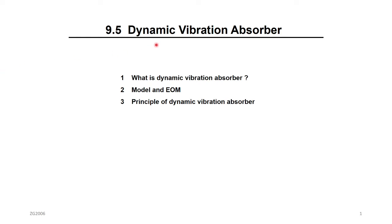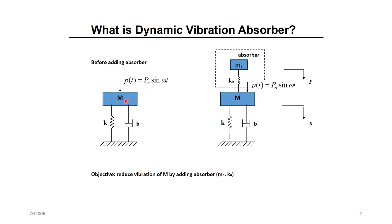This is another application of the steady-state solution or frequency response: the vibration absorber. What is a vibration absorber? Consider a running machine — for example, a rotor bearing system like a pump or compressor — running at high speed with an imbalance force, which is a harmonic force on an underdamped system. The system is supported on the floor on a bearing, which acts like a spring and damper system.